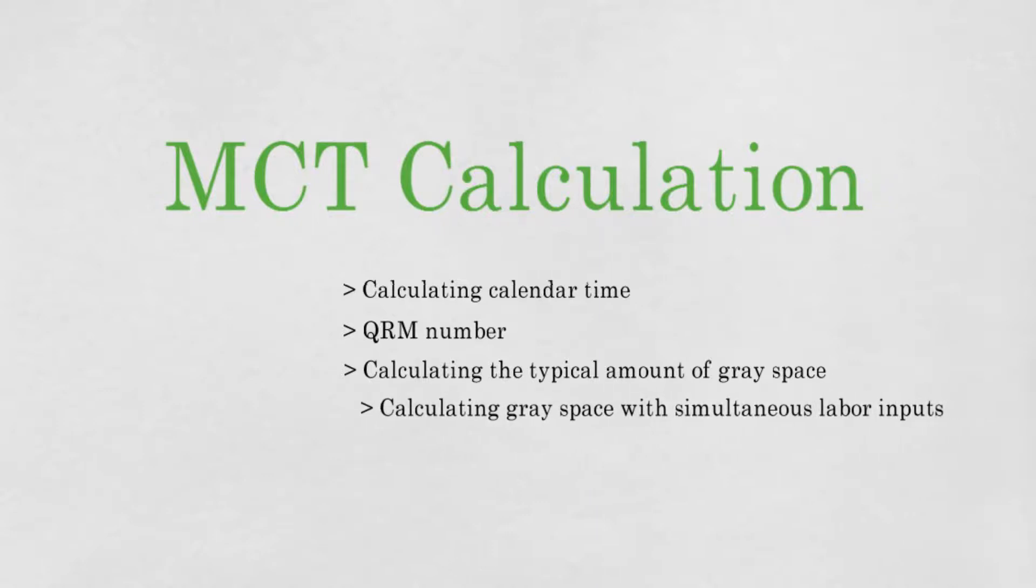Therefore we start with explaining the calculation in calendar time. We will also discuss an MCT based metric that helps to motivate MCT reduction known as the QRM number. Thereafter we delve into the calculation of the gray space. This becomes more difficult when there is for example simultaneous labor input. Therefore we will also learn how to deal with this. Finally we introduce a tool that assists MCT calculation called Little's Law.